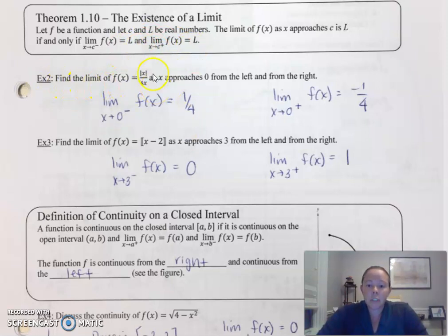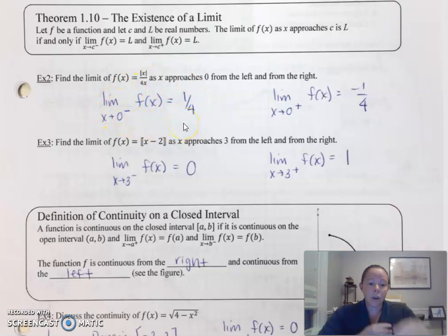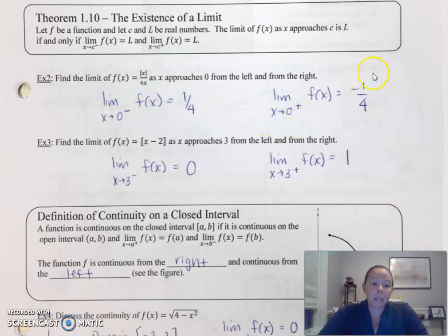Find the limit of this function as x approaches zero from the left and from the right. From the left, if you were to graph this on your graphing calculator, you can easily see what the graph looks like. You approach positive one-fourth, but then from the right you approach negative one-fourth. Therefore, the limit does not exist.